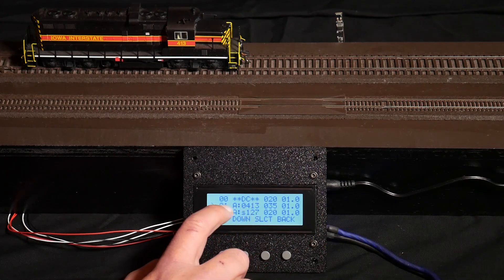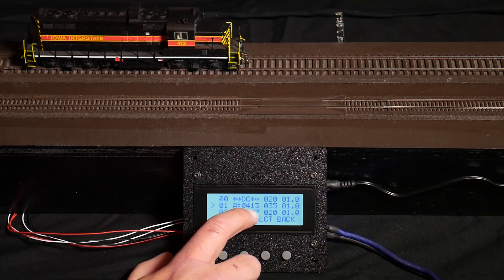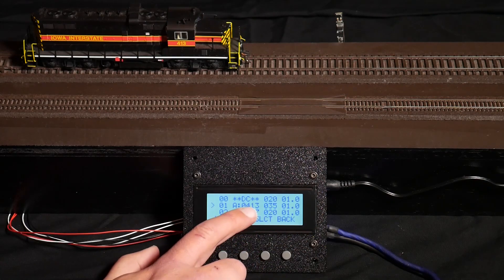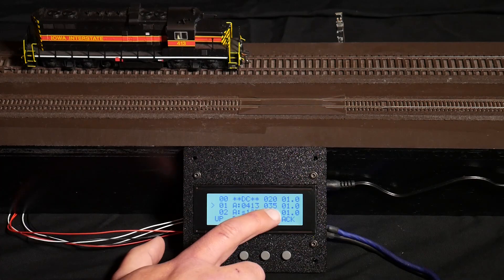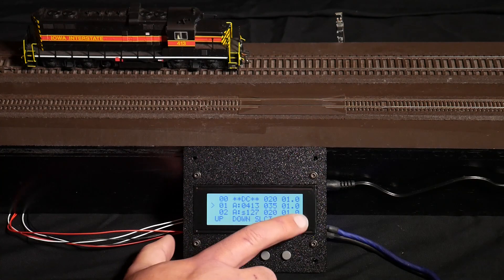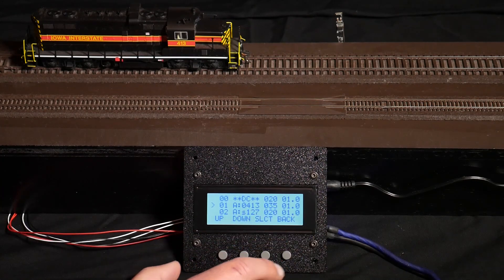This is 413's configuration. It's in slot number one. And you can see just from the summary screen, address 413 is a long DCC address, 35% of maximum speed, and a one second acceleration rate again.